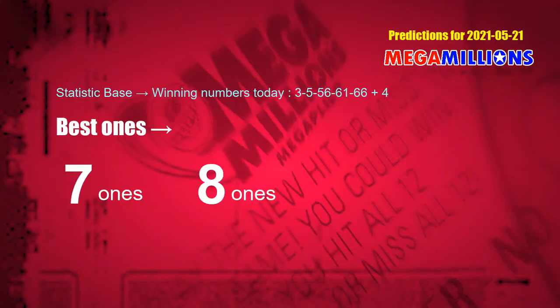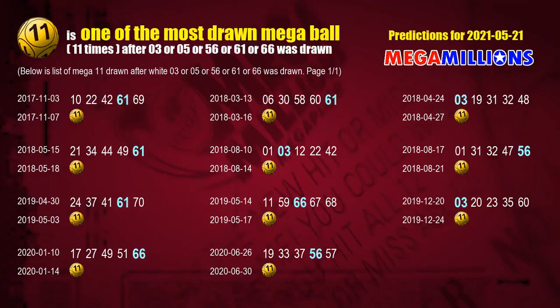According to the statistics above, with white balls 03, 05, 56, 61, and 66 drawn today, the frequent following units digits are: seven, zero, two, eight, and one. After getting the following units digits, we can use following number statistics to find out the following Mega Ball numbers too.